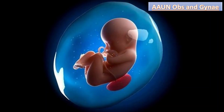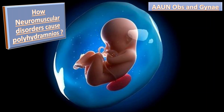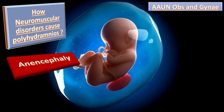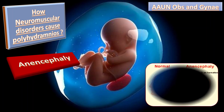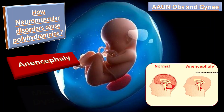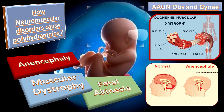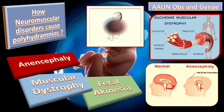How do neuromuscular disorders cause polyhydramnios? All neuromuscular disorders causing polyhydramnios, such as anencephaly, muscular dystrophy, and fetal akinesia, affect fetal swallowing, resulting in an increased amount of amniotic fluid.